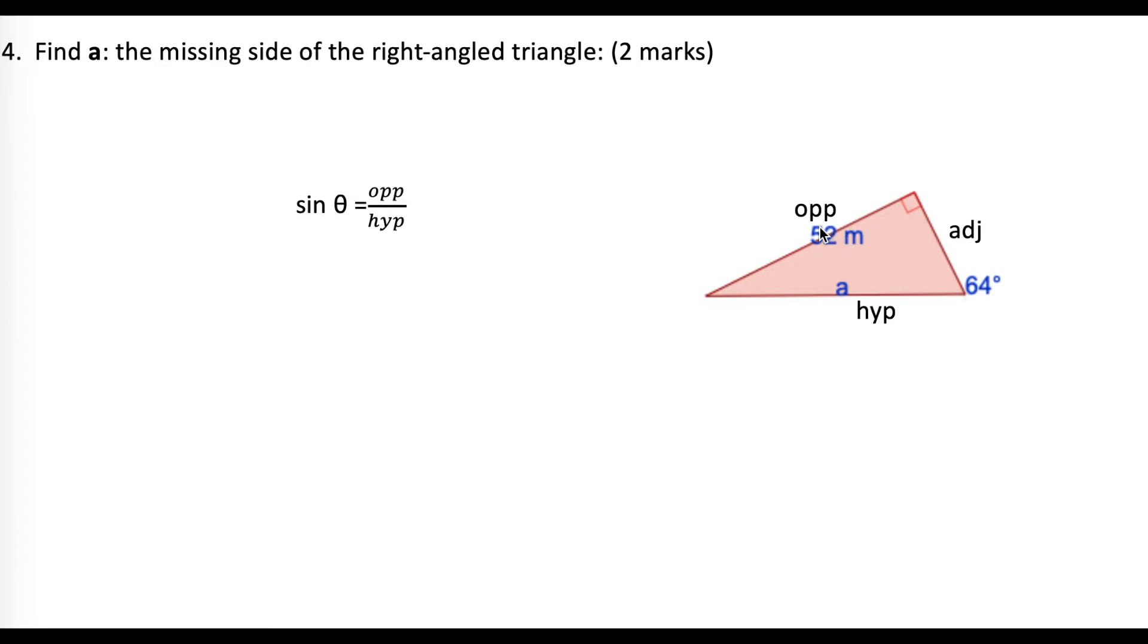I'm going to fill in what we know. The opposite is 52. The theta is 64. So sine of 64 is 52 over the hypotenuse, which is A. I'm after A.